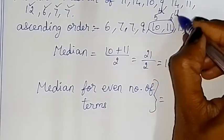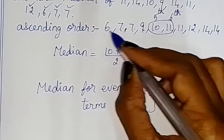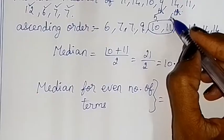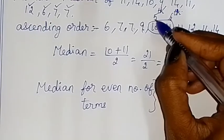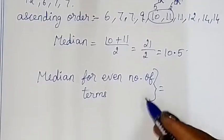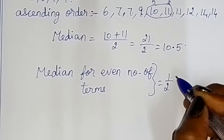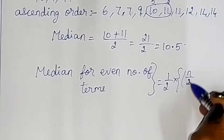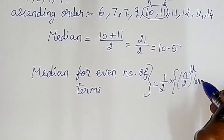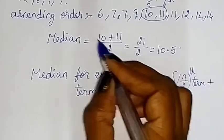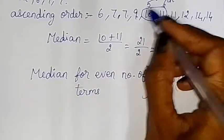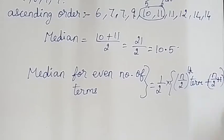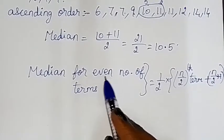For even number of terms, the formula is: divide n by 2 to get the first middle term (n/2), and then add 1 to get the second middle term (n/2 + 1). The median is half times the sum of the n/2 term plus the n/2 + 1 term. That is the formula for even number of terms.